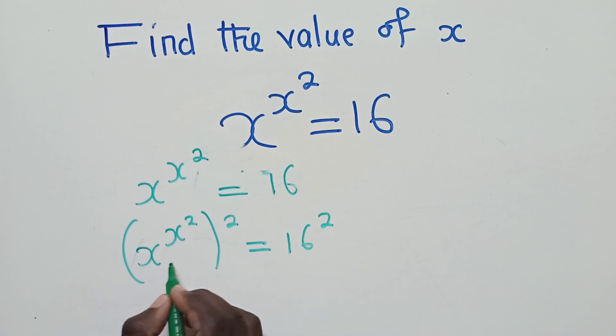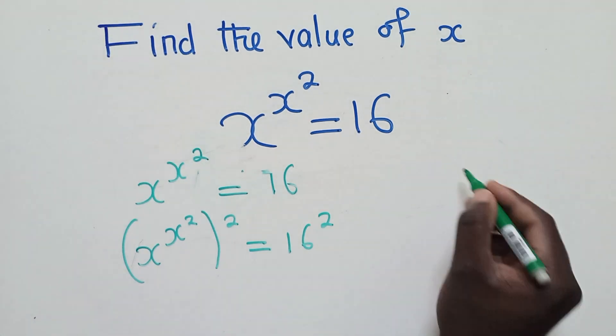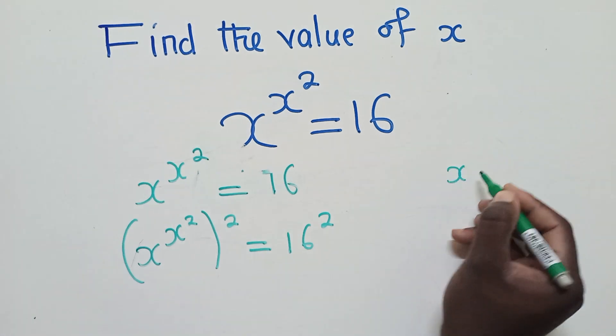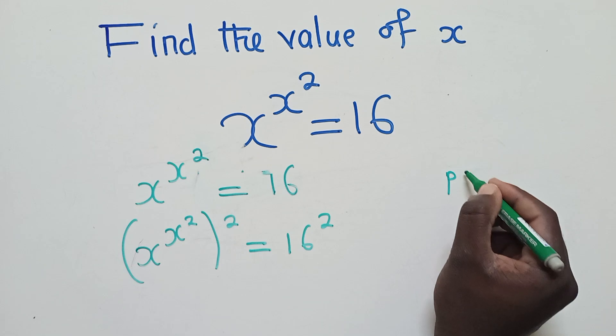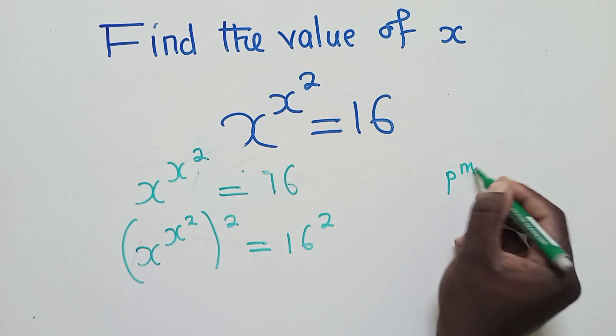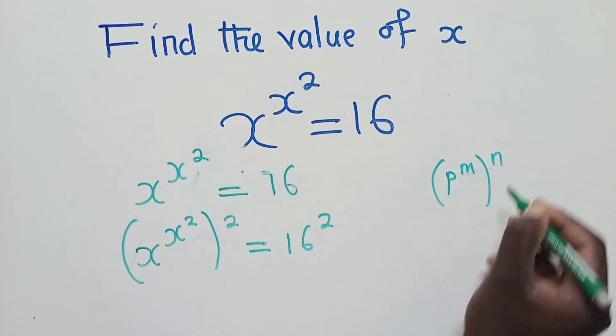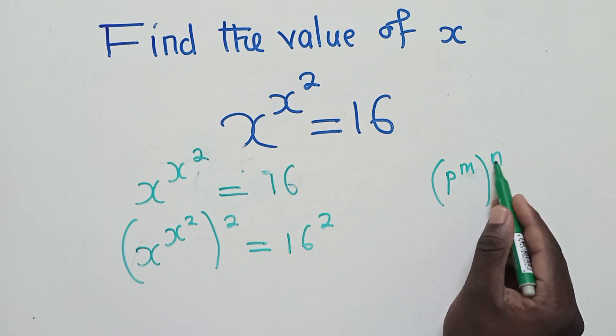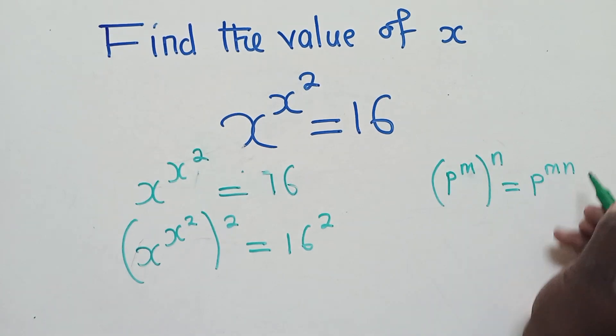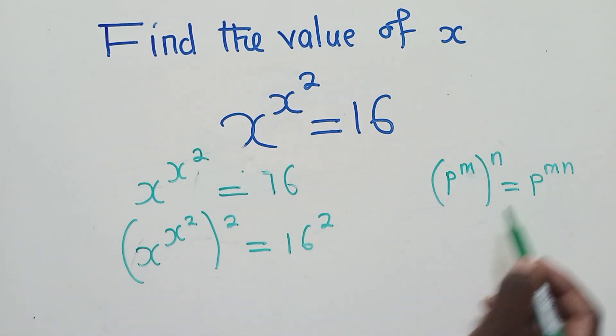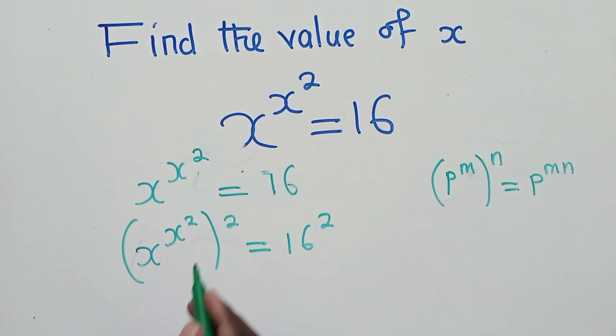We know the laws of indices. When you've got p^m and then power n outside here, we are supposed to multiply these powers. Remember this law of indices, and this is what you're going to get. This same method is what we're going to use right here.